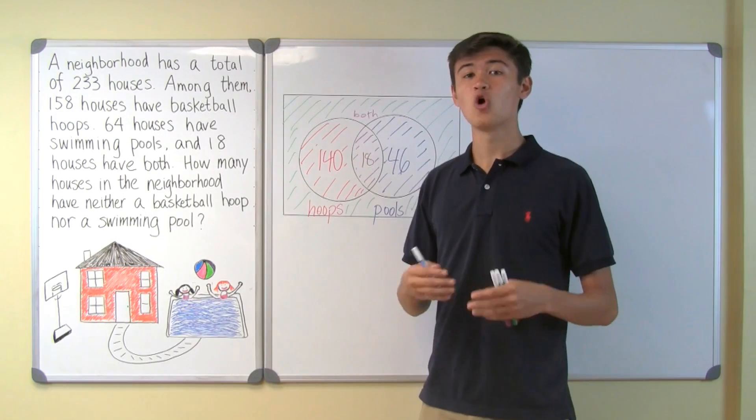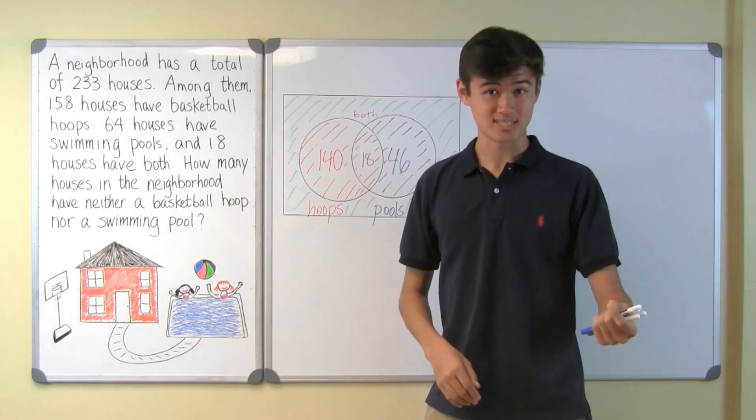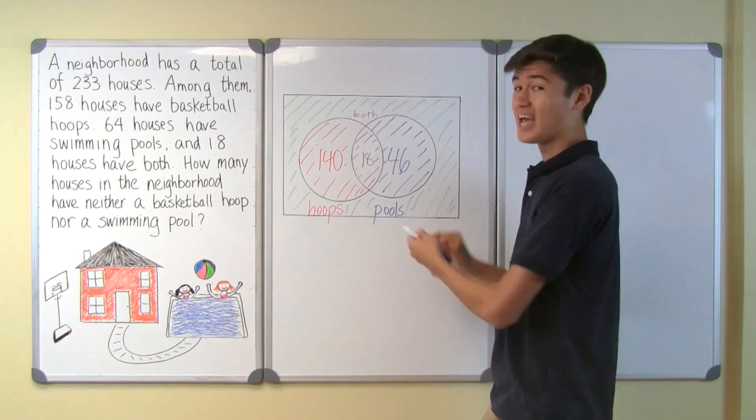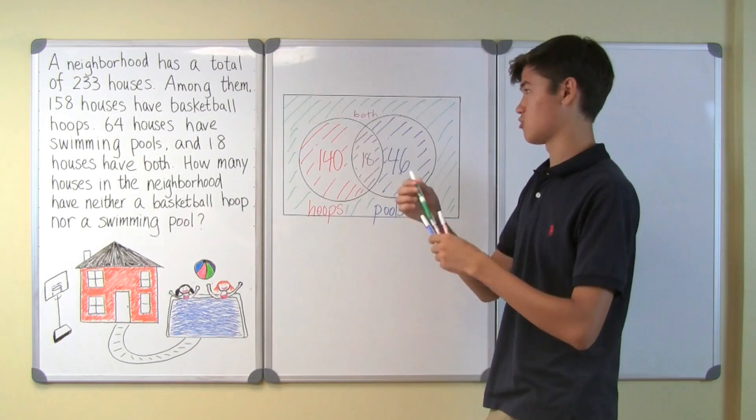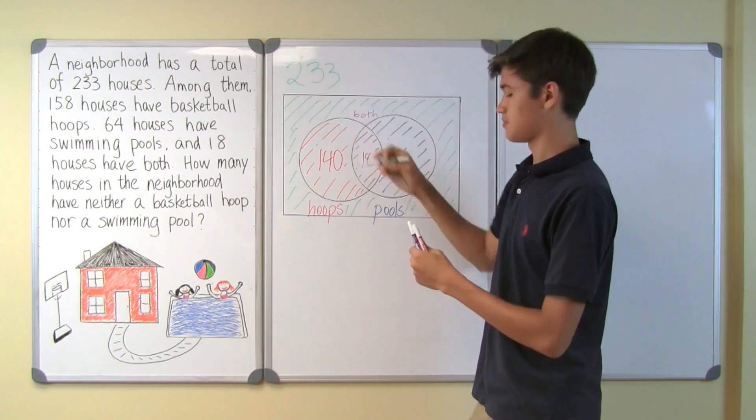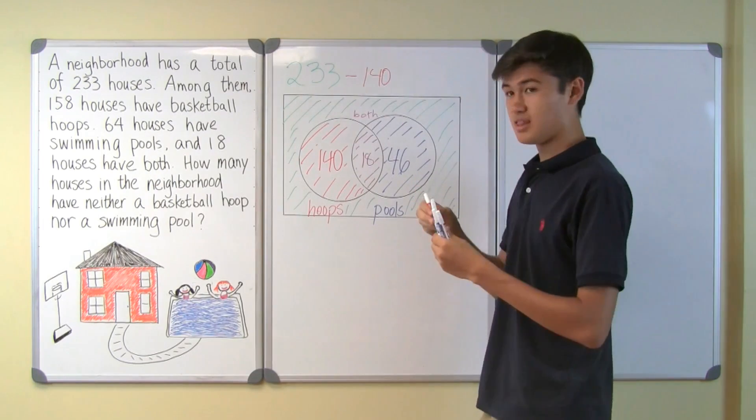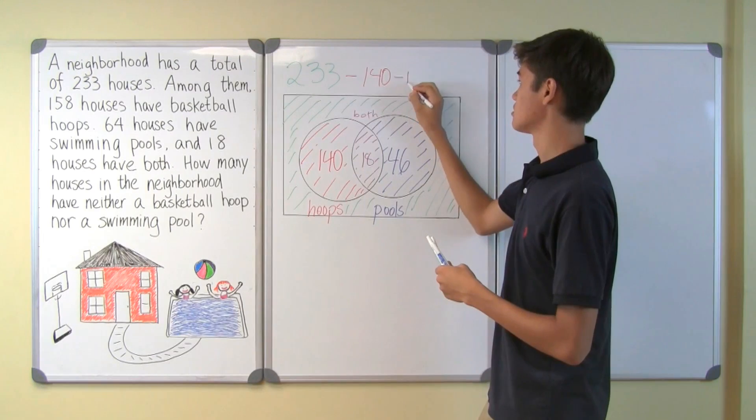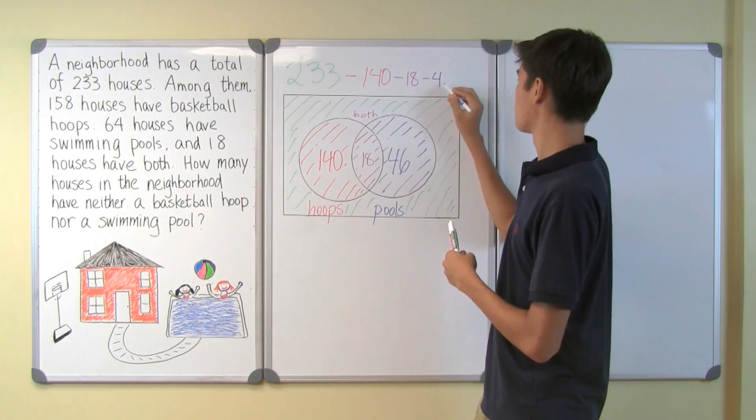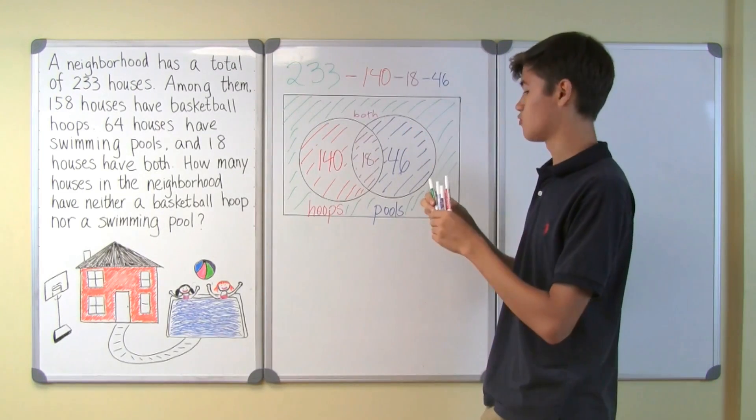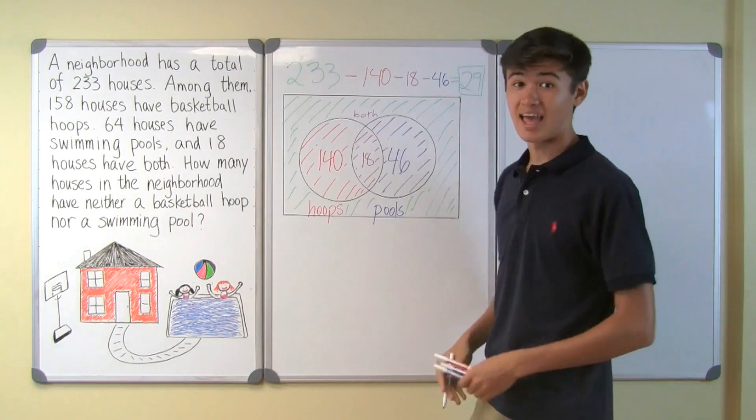Now the question tells us that we have a total of 233 houses. That's the whole rectangle. We need to solve for the green section. So we simply take the whole rectangle and subtract by the inner sections: the red section, the purple section, and the blue section. So we have a total of 233. We need to subtract by the red section, or 140, then subtract by the purple section, or 18, and finally subtract by the blue section, or 46. And you will get 233 minus 140 minus 18 minus 46 equal to 29. And that's your answer.